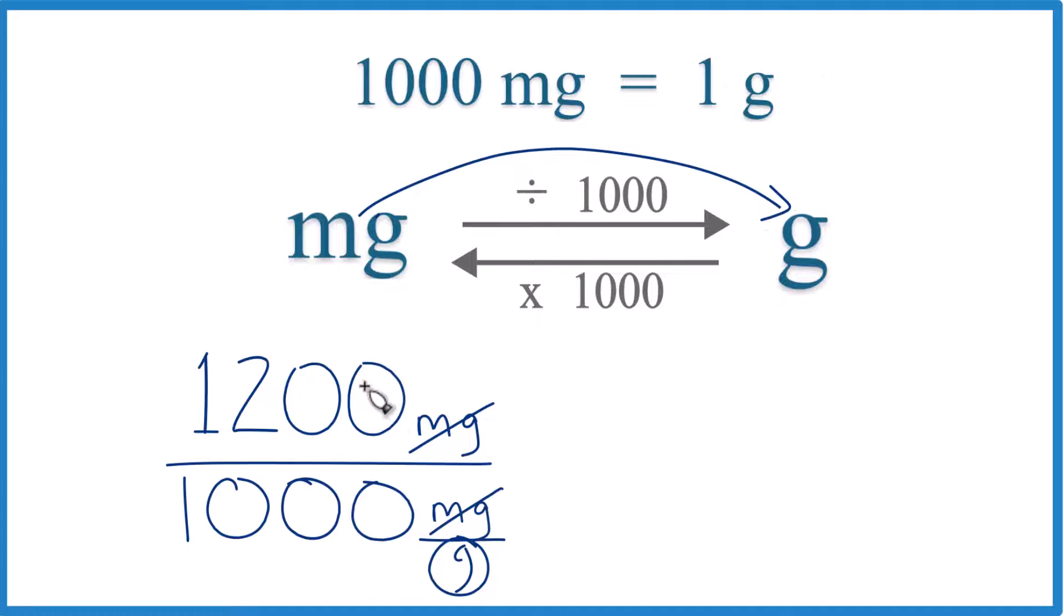So why don't we do this? Why don't we move this decimal point here, 1, 2, 3. So we're just dividing by 1 and then 1, 2, 3. And we end up with 1,200 milligrams equals 1.2 grams.